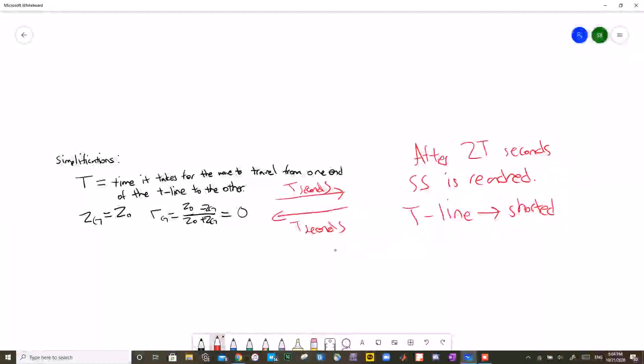Before we solve some examples, let's take a look at some simplifications we're going to use for the rest of the video. First, we're going to assign the variable capital T to the time it takes for the wave to travel from one end of the transmission line to the other. We're also going to make the ZG equal to Z0 so that the reflection coefficient at the generator end is zero.